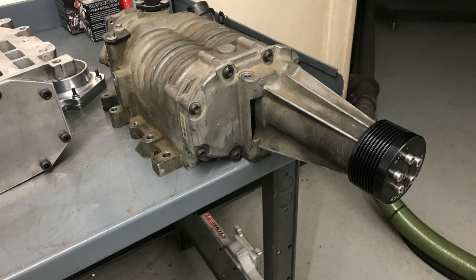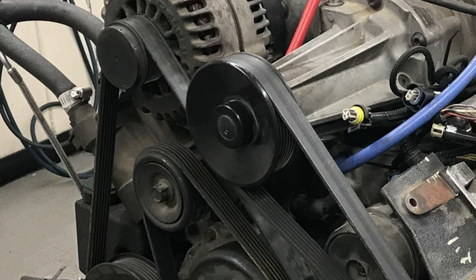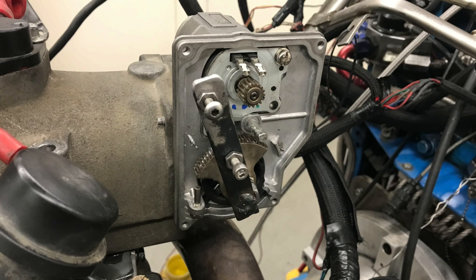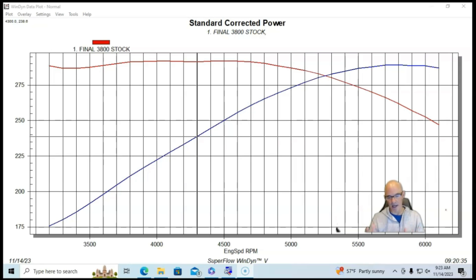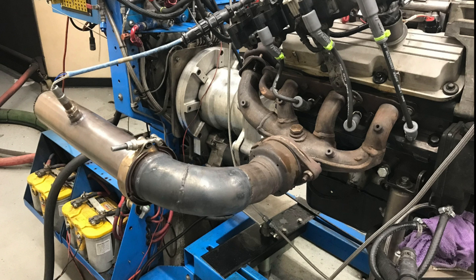We did run it with an open exhaust. It had the factory exhaust manifolds and the crossover, we'll call it a Y pipe, and then we ran basically a three inch elbow off of the exit of what would be the rear of the front wheel drive exhaust manifold.